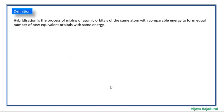Hybridization is the process of mixing of atomic orbitals of the same atom with comparable energy to form an equal number of new equivalent orbitals with the same energy. The resultant orbitals are called hybridized orbitals.